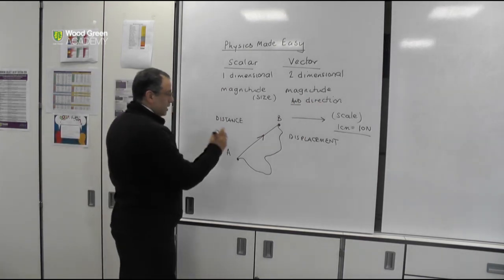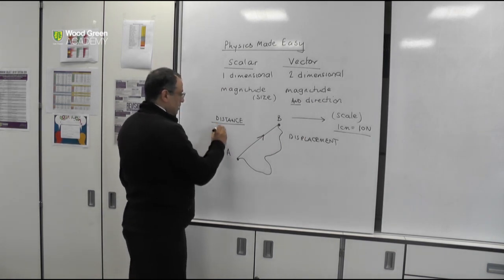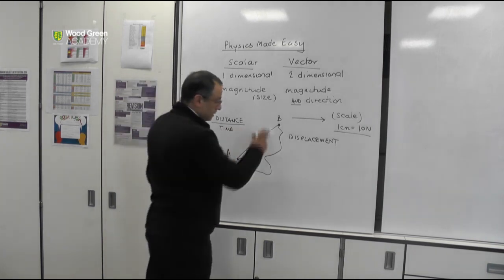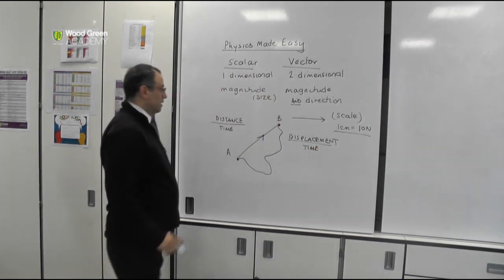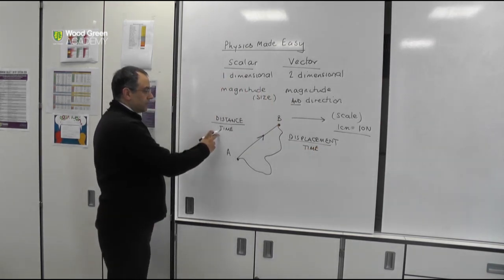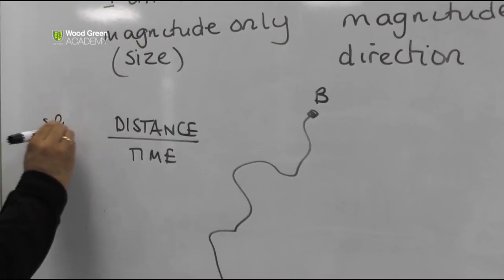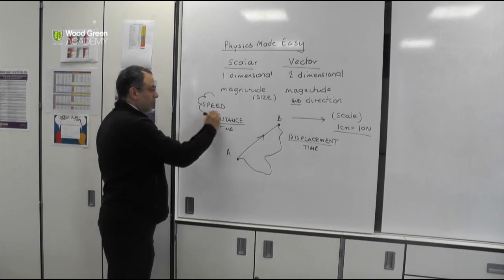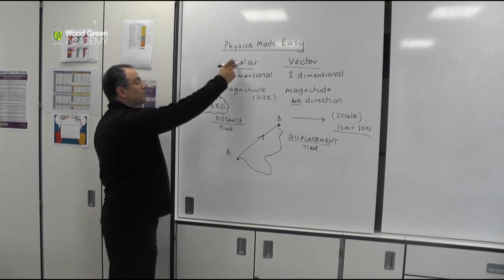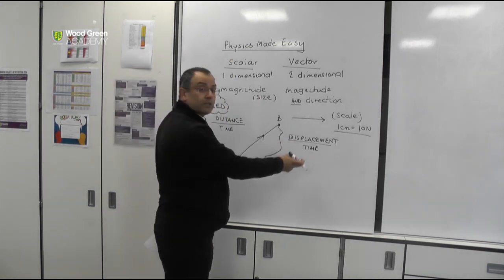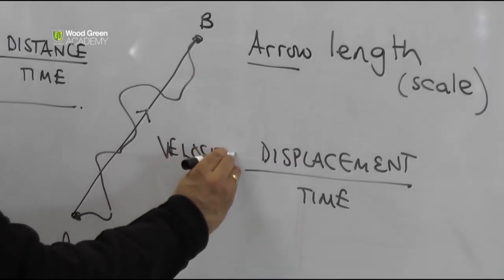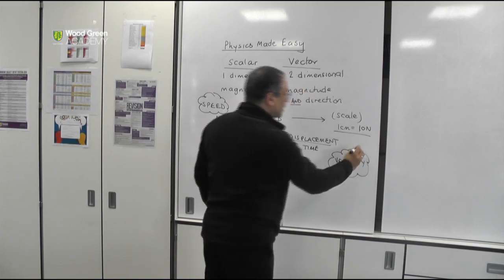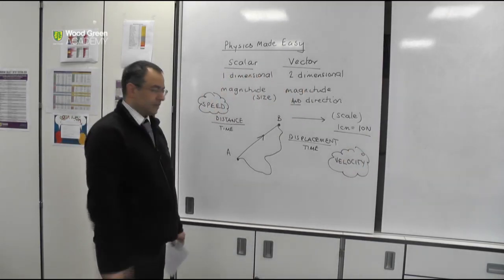I can measure the time it takes to travel along the curved path, and I can measure the time it takes to go from A to B, which is the same time. Then dividing the distance by the time would give me speed, which is scalar. Dividing the displacement by the time gives me velocity, which is speed in a given direction.